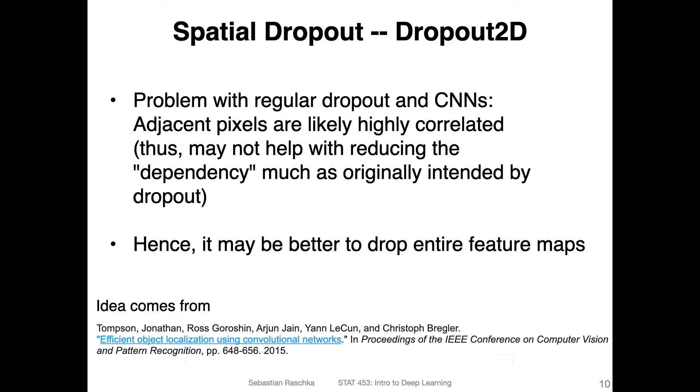But there's a good argument by Thompson here in this paper I linked below, that the problem with regular dropout is that in CNNs, you usually have images where you slide your kernels over the image.